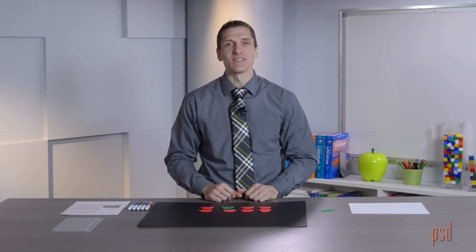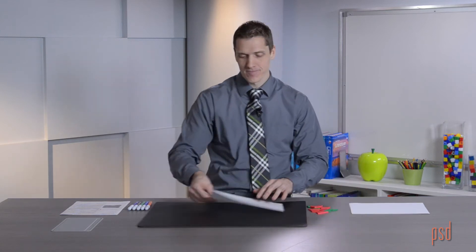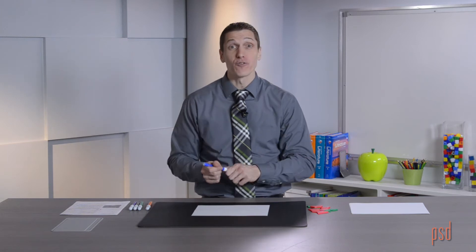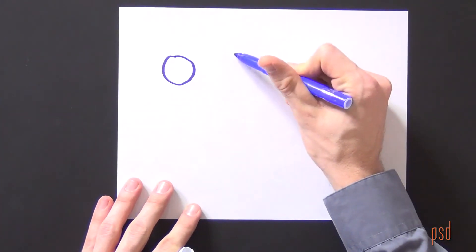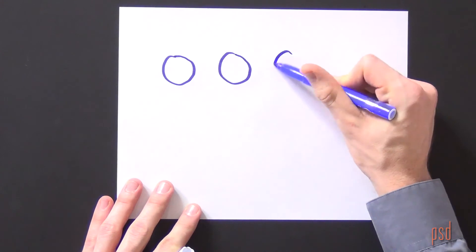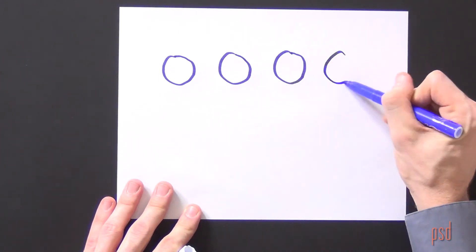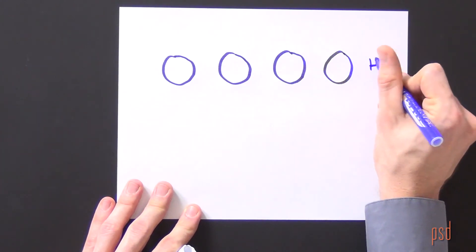Now, I'm going to represent this same problem using a pictorial representation. I know that Miss Richardson purchased 4 pounds of ham. So I can draw 4 circles. Each circle represents 1 whole pound and I'll label this as ham.